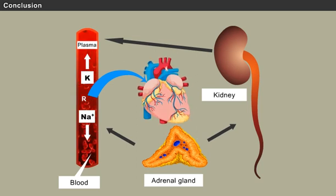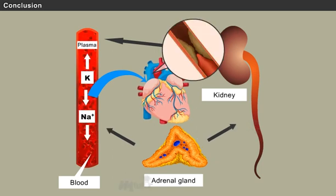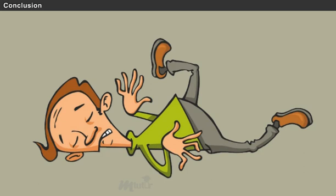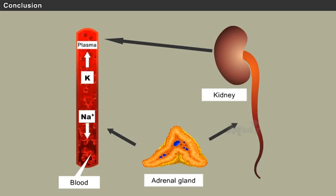The kidneys also regulate the level of electrolytes in the blood, like potassium. Potassium is an electrolyte whose concentration must stay within a narrow range for your heart to generate normal electrical impulses. Abnormal potassium levels can cause an irregular rhythm called arrhythmia, which is life-threatening. Under normal conditions, when blood potassium levels are elevated, the kidneys drain the excess potassium into the urine to keep blood potassium levels stable.